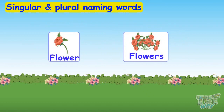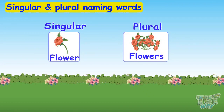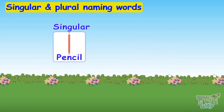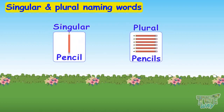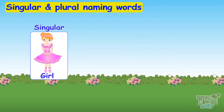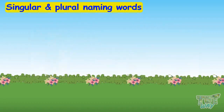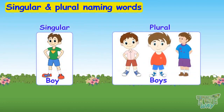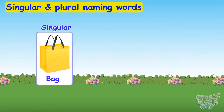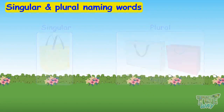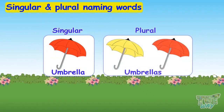Flower, flowers — flower is a singular naming word and flowers is a plural naming word. Pencil, pencils. Girl, girls. Boy, boys. Bag, bags. Umbrella, umbrellas.